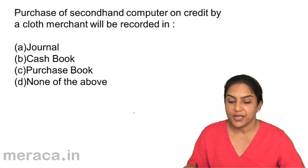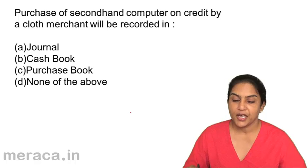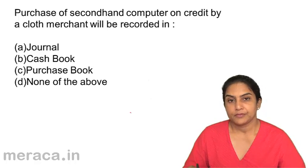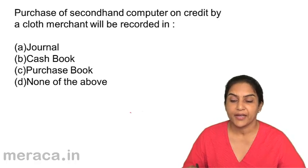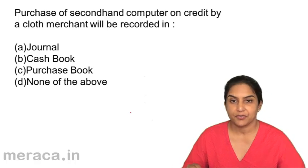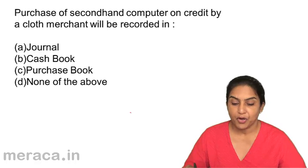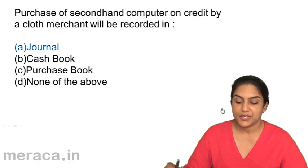Question 6: Purchase of a secondhand computer on credit by a cloth merchant will be recorded in — A: journal, B: cash book, C: purchase book, D: none of those. The entry is: computer account debit to the creditor for computer. So this would be recorded in the journal proper. Correct answer: A.